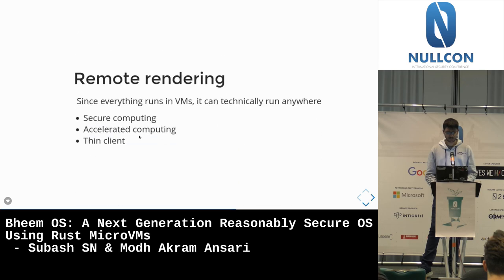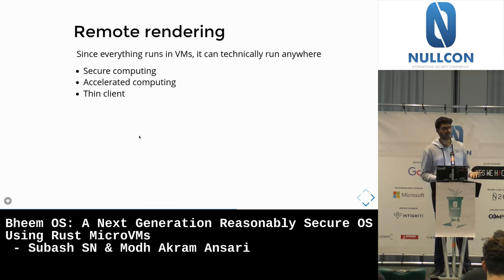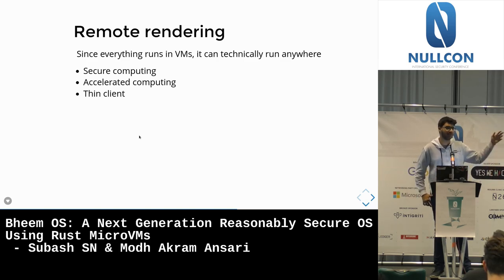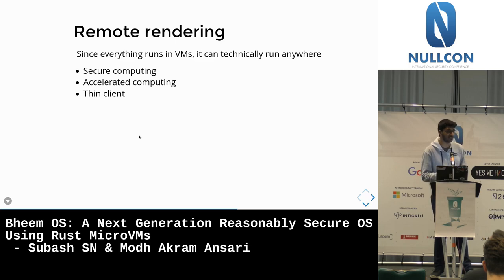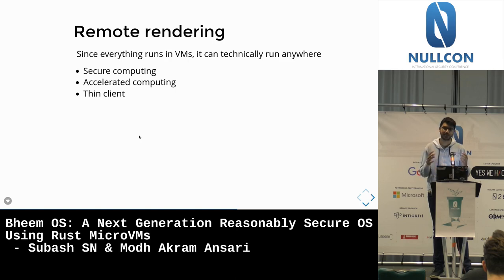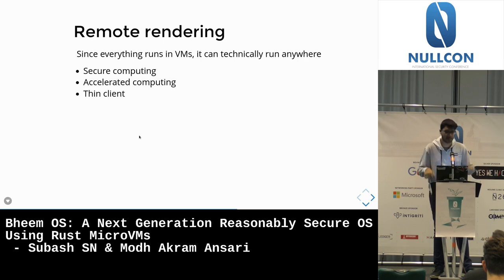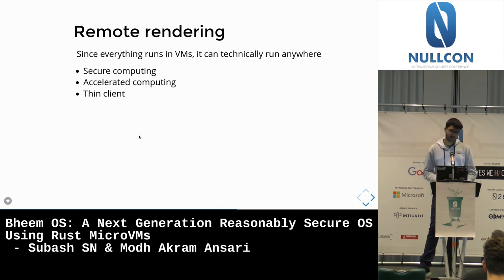Remote rendering: all apps run in VMs, so the VMs can run anywhere. For a corporate environment, you could have centralized servers where sensitive apps render, and remote the output to the user — sensitive files need not even be at the user's computer. It's exactly like remote desktop, but now at the per-app level, so the user doesn't feel the overhead. You could make an entire computer a thin client while still having better performance thanks to the window manager being locally rendered.